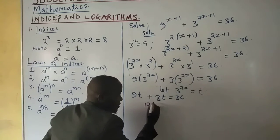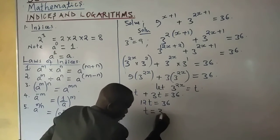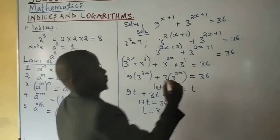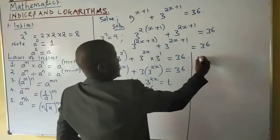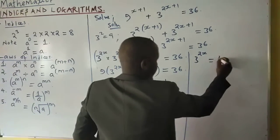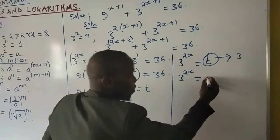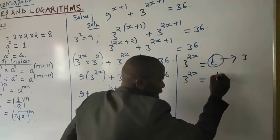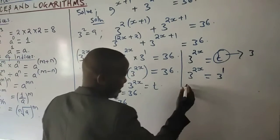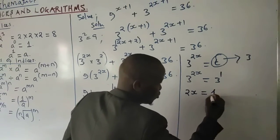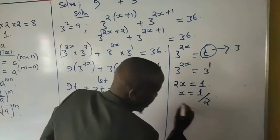Dividing both sides by 12, t = 3. Since we let 3^(2x) = t and t = 3, we have 3^(2x) = 3¹. Equating indices: 2x = 1, so x = 1/2. That is the solution.